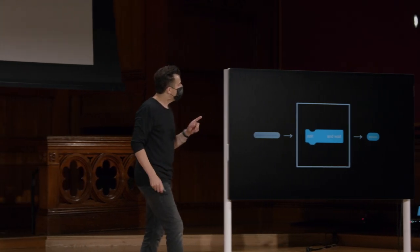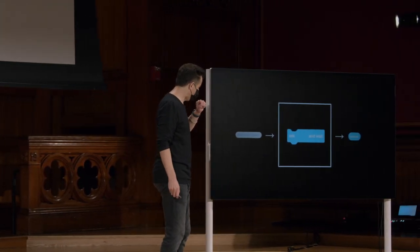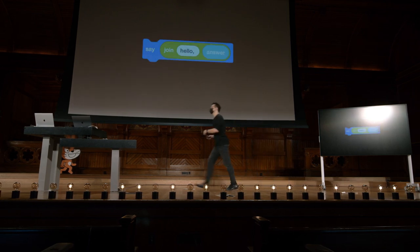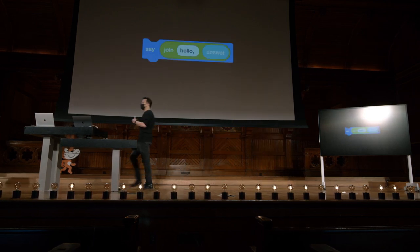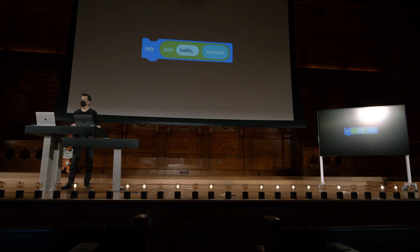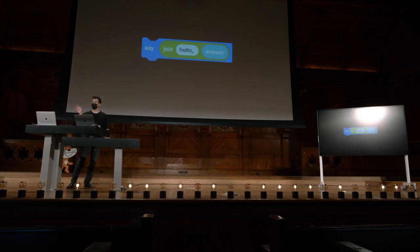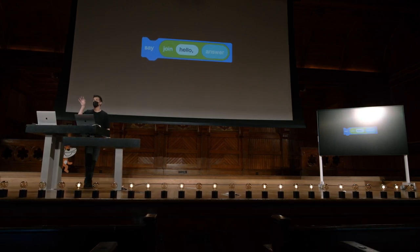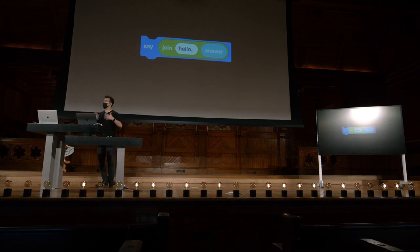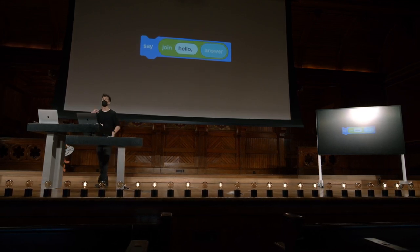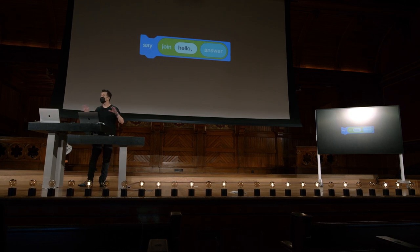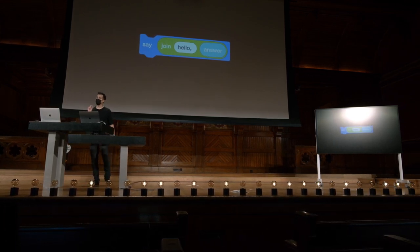O que eu fiz então com esse valor? Bem, considere que com a função subsequente, também tivemos esse bloco Say combinado com uma junção. Então, temos essa variável chamada Answer. Estamos juntando ela com o primeiro argumento, Hello. Já vemos que algumas funções, como o Join, podem não ter um, mas dois argumentos ou entradas, e tudo bem.